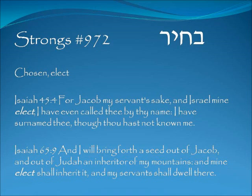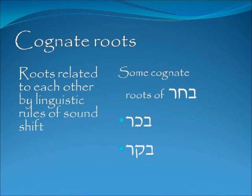The word 'bachir' is a noun and it means chosen or elect. Isaiah 45:4 — 'For Jacob my servant's sake and Israel mine elect, I have even called thee by thy name, I have surnamed thee though thou hast not known me.' The Father made a choice — he picked out Israel. Isaiah 65:9 — 'I will bring forth the seed out of Jacob, and out of Judah an inheritor of my mountains, and mine elect shall inherit it.' The ones he selects, they will inherit the land.